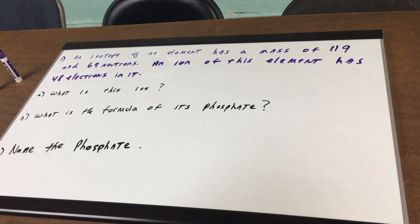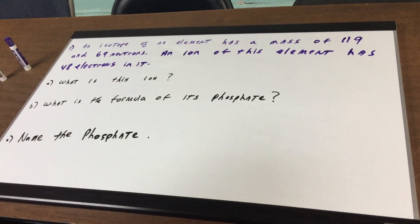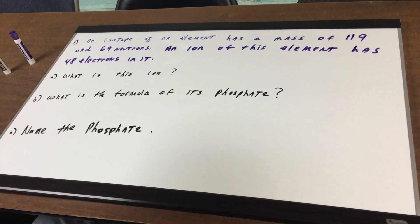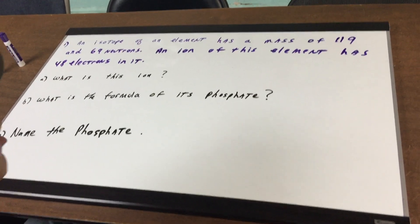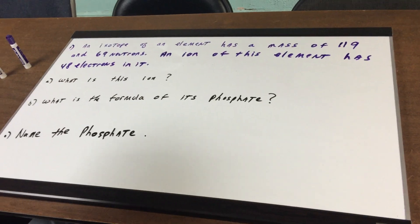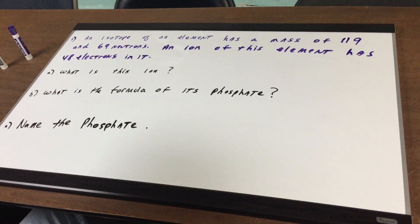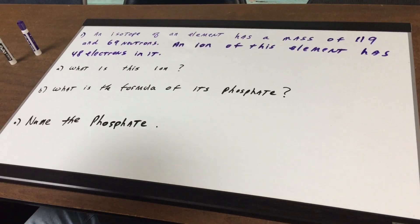If I said to you an isotope of an element has a mass of 119 and 69 neutrons, an ion of this element has 48 electrons in it. What is the ion?